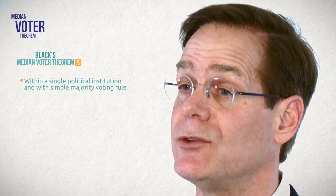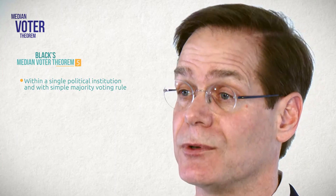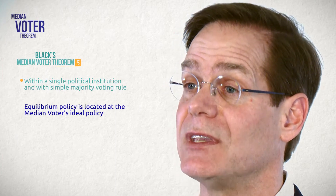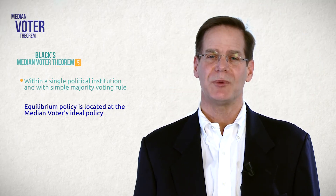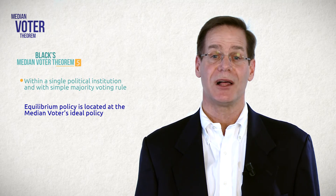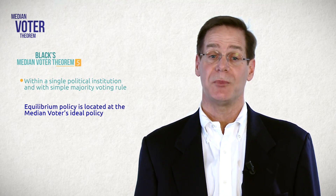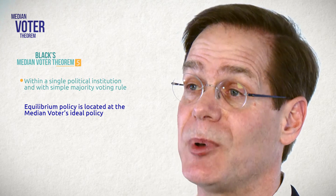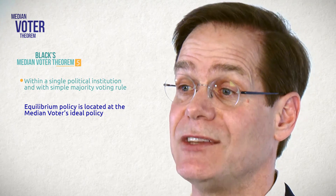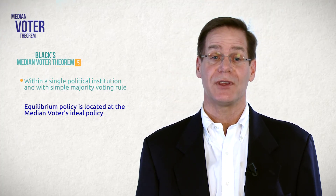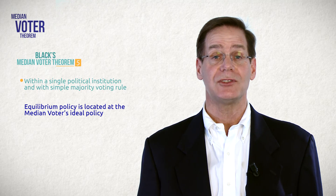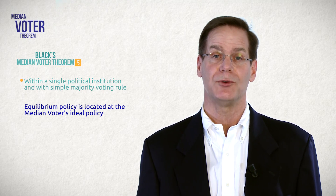This analysis leads to Black's Median Voter Theorem. Given our assumptions, within a single political institution governed by a simple majority collective action rule, the equilibrium policy is located at the median voter's ideal point. From this simple model, we better understand what gives rise to changes in policy. New elections may bring about a different set of policymakers with different ideal policies. Similarly, new information may change the views of constituencies. Either may cause a shift in the median voter's ideal, and we will observe policy changes move toward the ideal policy point for the new median voter.